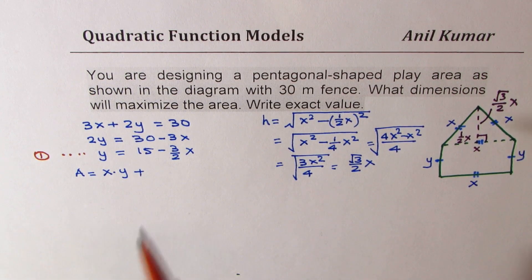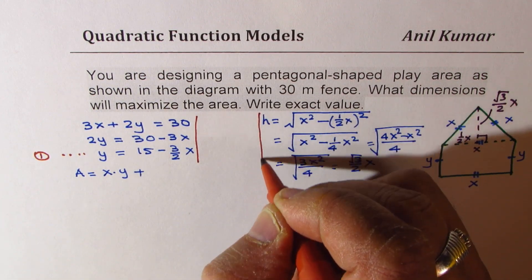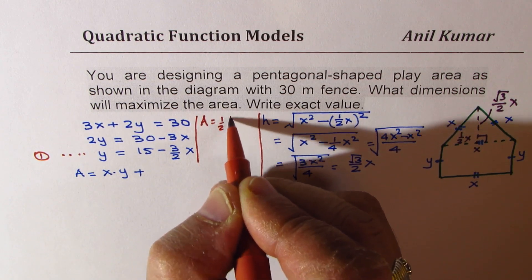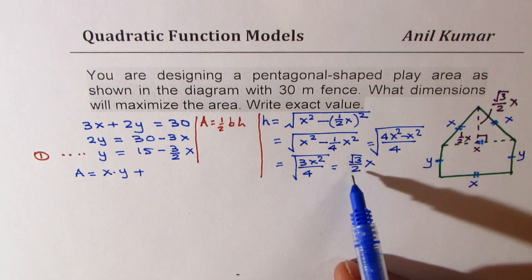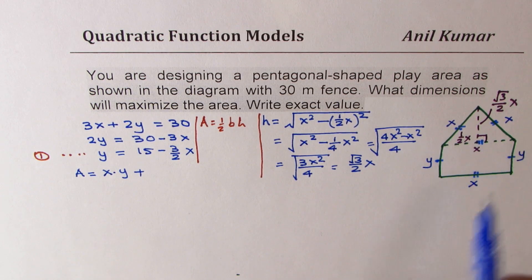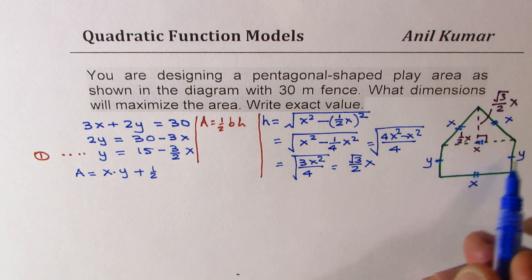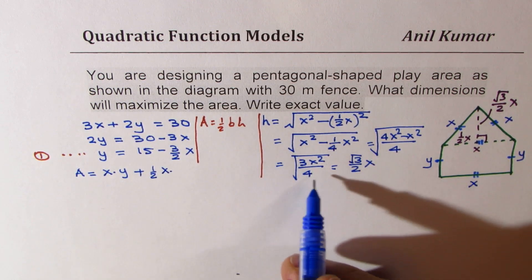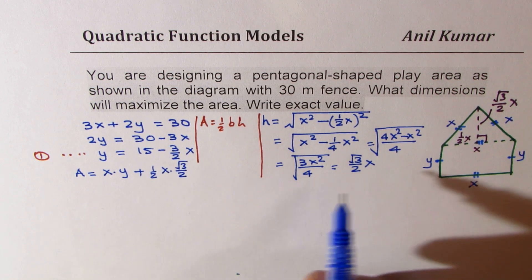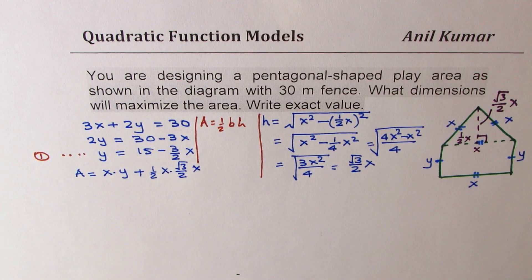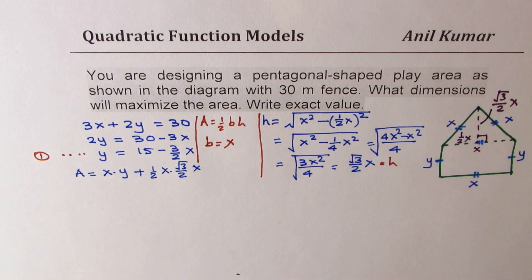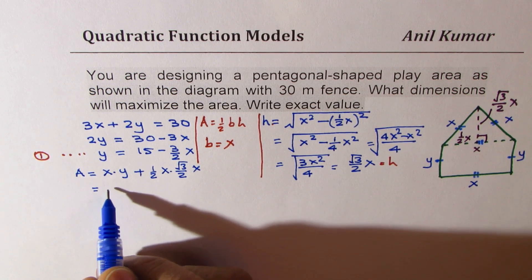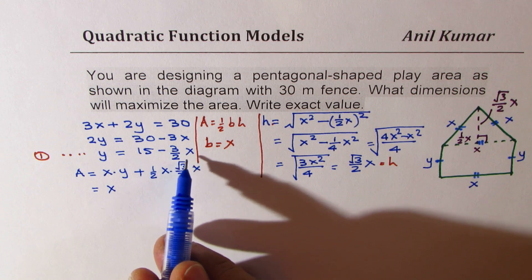The area of the triangle is half base times height. Since base is x and height is (√3/2)·x, the area of the triangle equals (1/2)·x·(√3/2)·x = (√3/4)·x². So the total area can now be written as x times y — where y is 15 − (3/2)x — plus (√3/4)·x².